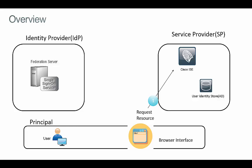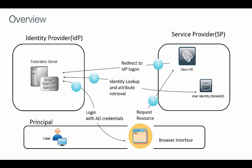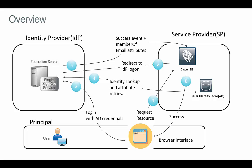Let's say the user is trying to access the Sponsored Portal hosted in ICE. ICE will redirect the user to an authentication portal hosted directly on the identity provider. The user types Active Directory credentials, which are validated against Active Directory infrastructure through an LDAP call. PingFederate retrieves the MemberOf and email attributes and generates a success event to ICE. The user should then see the success page on the Sponsored Portal and experience single sign-on as long as the session is still alive on the identity provider side.